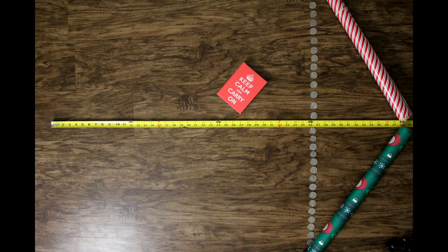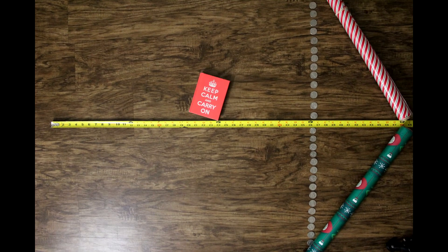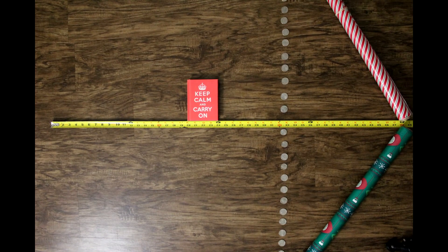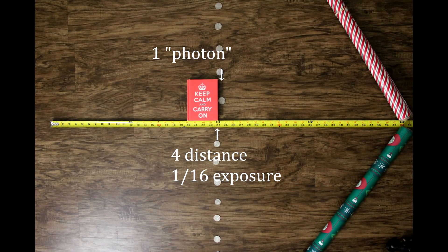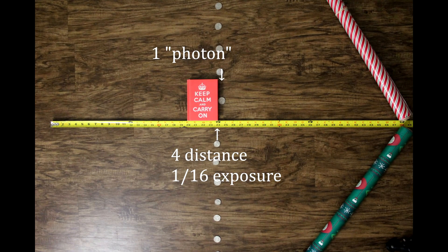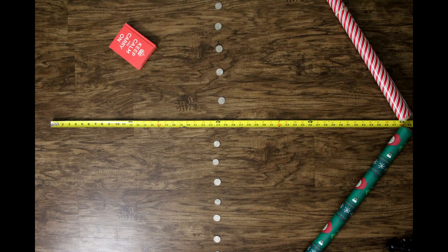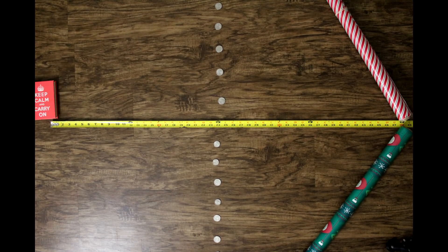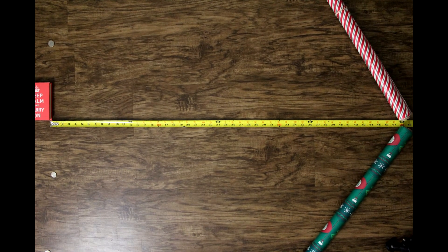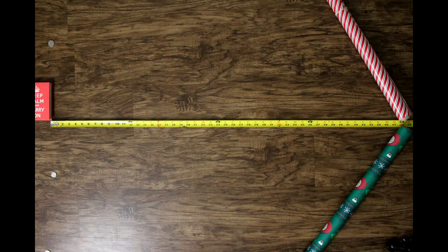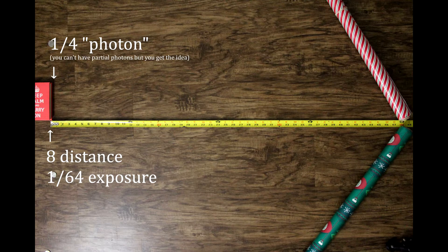If we double it again, making it four times the distance, you now only have 1/16th the original exposure. And if you double it one more time to eight times the distance, now you only have 1/64th the light, which is not much light at all.